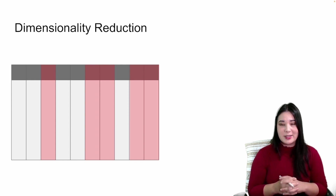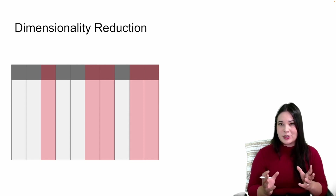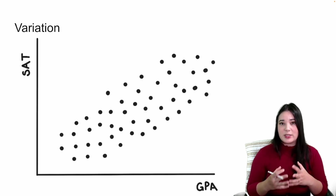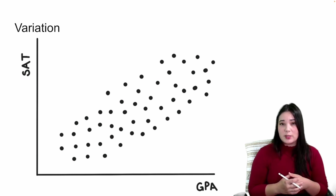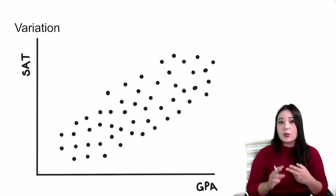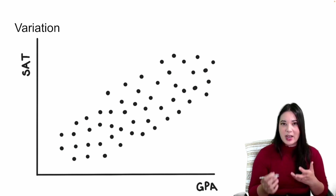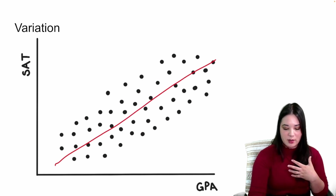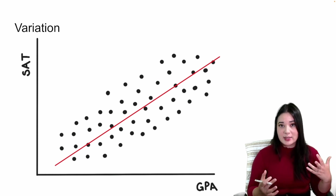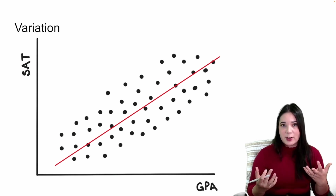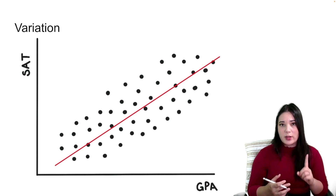However, that's not what principal component analysis does. PCA is a method of dimensionality reduction that doesn't drop individual variables. Instead, it creates a new, more efficient set of variables to describe the information in our data. For example, here we have GPA and SAT score for a bunch of students. Because GPA and SAT are highly related, we could create a new variable along a new axis — something like 'academic test-taking skills' — that explains the variability in our data with just one single new variable.